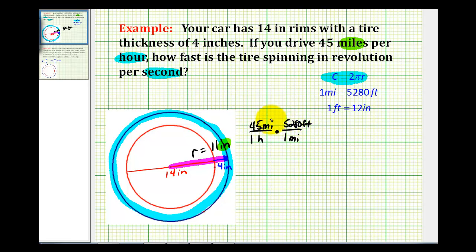Notice how the units of miles will simplify out. So now we've converted miles to feet, and now we need to convert feet into inches. So we'll put one foot in the denominator, and 12 inches in the numerator, and now the units of feet have simplified out.